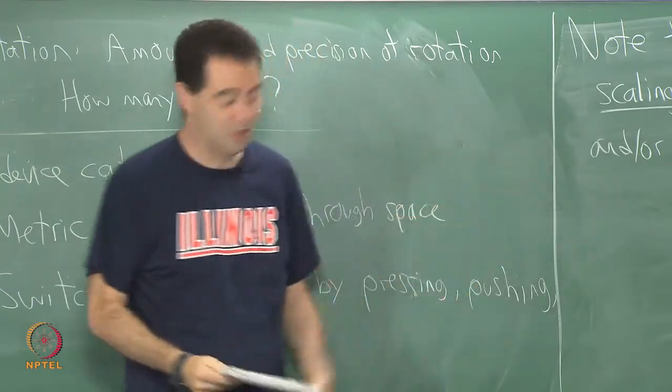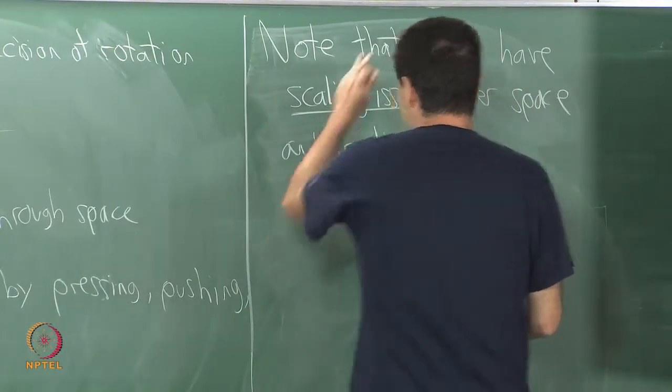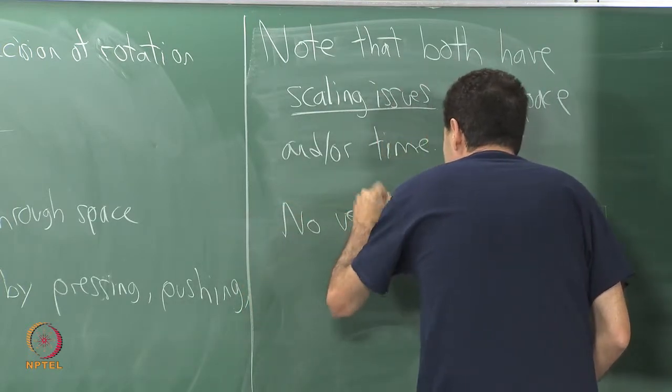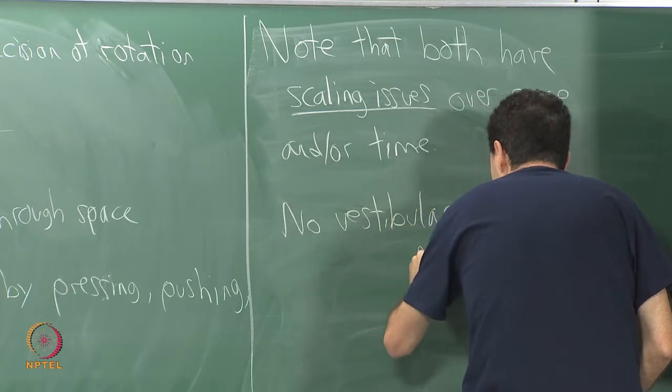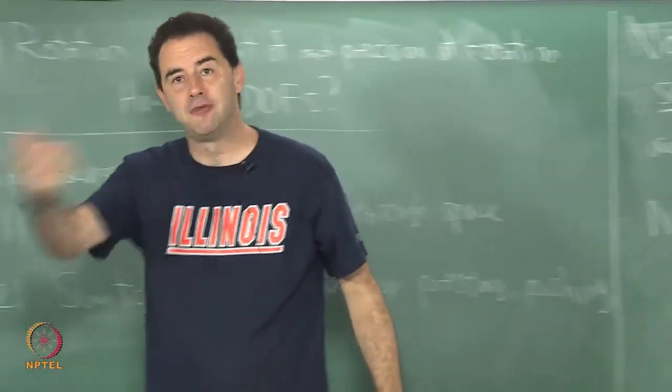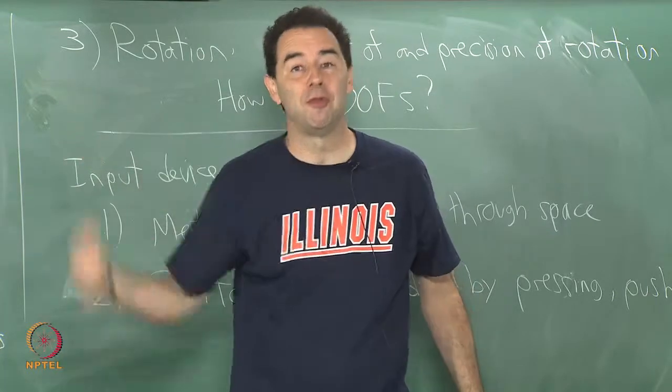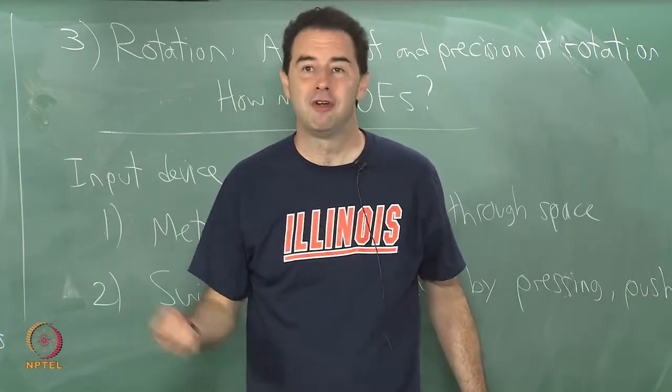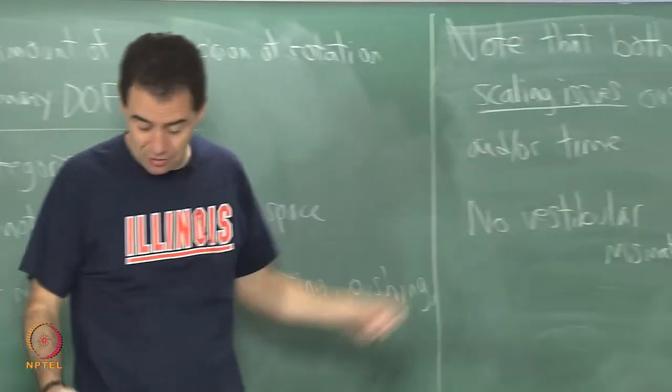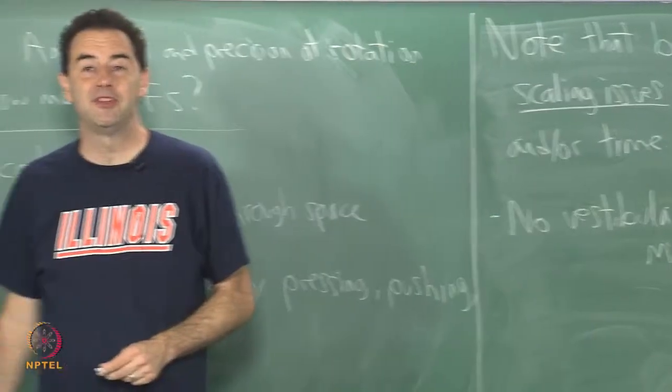The same kinds of issues show up here. One thing that is very interesting here to note, in addition to this note, is that there is no vestibular mismatch as long as you perceive this motion as being a motion of your limbs, let us say, or some other motion of an object that is just in the world with you. As long as you do not perceive it as motion of yourself from your own viewpoint, then you can do all kinds of interesting scalings and rescalings and you will not experience simulator sickness from that.